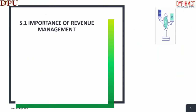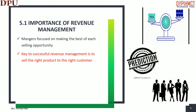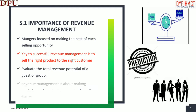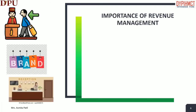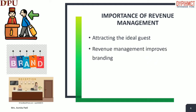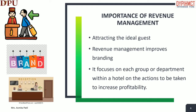Let us understand the importance of revenue management. Managers focused on making the best of each selling opportunity. The key to successful revenue management is to sell the right product to the right customer. Evaluate the total revenue potential of a guest. Revenue management is about making predictions about business coming from the future. You have to attract the ideal guests to your hotel. Revenue management improves the brand image of the hotel and focuses each department on actions to increase profitability.